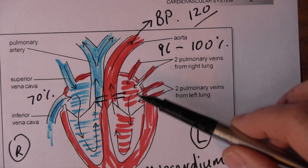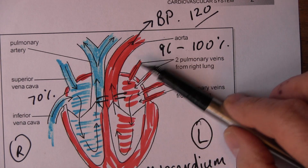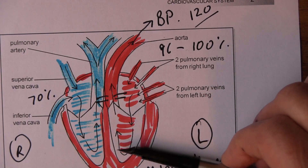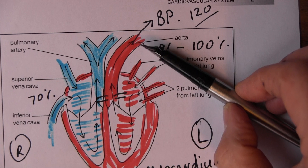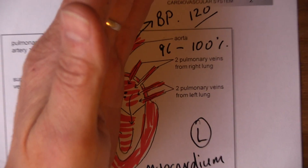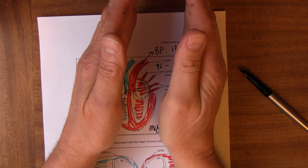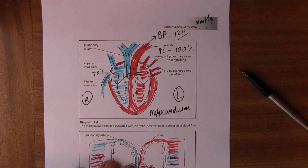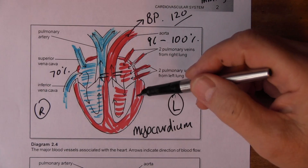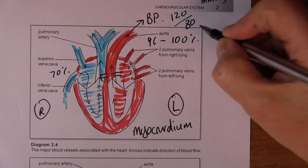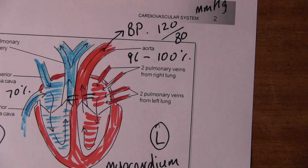Then the heart relaxes so that pressure in the left ventricle goes down, allowing blood from the pulmonary veins and left atrium to refill the ventricle. Blood pressure in the arterial system doesn't drop to nothing because the arteries are elastic — they expand during systole then recoil, maintaining pressure during diastole. That diastolic pressure is about 80 millimeters of mercury.